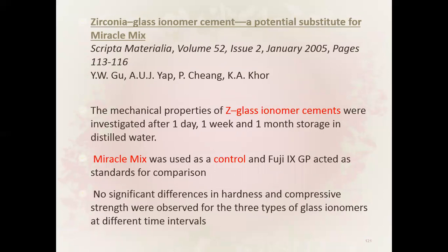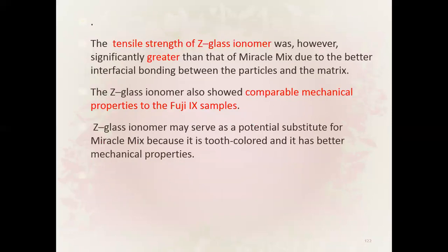Zirconia glass ionomer cement is a potential substitute for Miracle Mix. The mechanical properties of Zed Glass — zirconia GIC — were investigated after one day, one week, and one month storage in distilled water, using Miracle Mix as a control and Fuji 9 as a standard. No significant differences in hardness and compressive strength were observed for the three types of glass ionomer. However, the tensile strength of zirconia GIC was significantly greater than that of Miracle Mix, due to better interfacial bonding between particles and matrix. It may serve as a substitute because it is tooth-colored and has better mechanical properties.